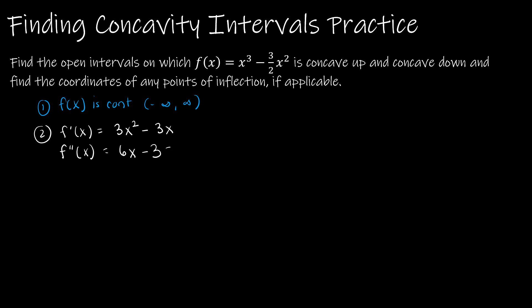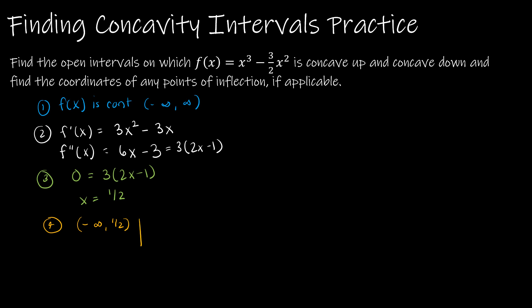If you want to reduce f double prime, this is 3 times the quantity 2x minus 1. Next, we determine anywhere the function is undefined or where f double prime of x equals zero. Setting zero equal to 3 times 2x minus 1, our only possible point of inflection is x equals positive one half. We're going to handle this exactly like before, plugging test points back into the second derivative function.